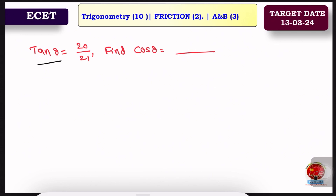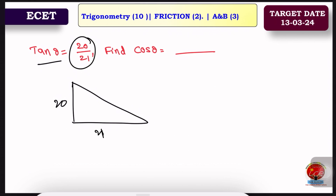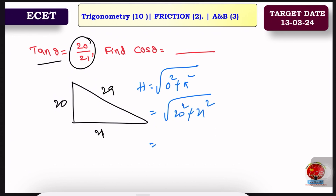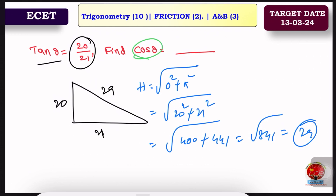Next question: tanθ = 20/21. We have a triangle where the opposite side is 20 and adjacent is 21. Using the Pythagorean formula: hypotenuse = √(20² + 21²) = √(400 + 441) = √841 = 29. So cosθ = adjacent/hypotenuse = 21/29.